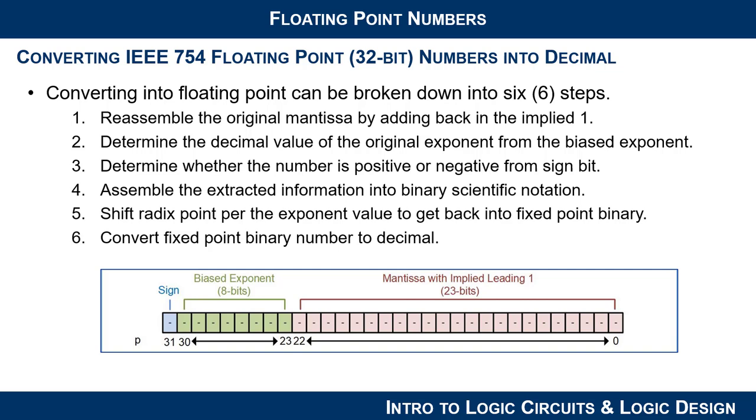Once you have that, you can shift the radix point back to where it was originally at to form the fixed binary point number. And then once it's in that form, it's trivial just to convert it back to decimal.